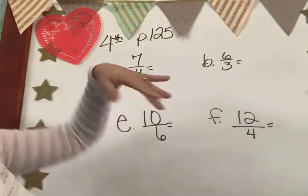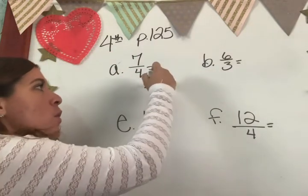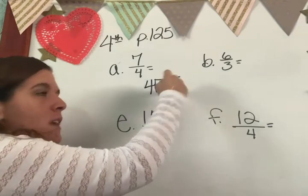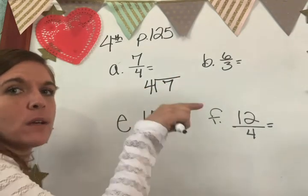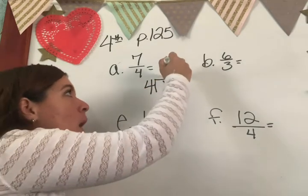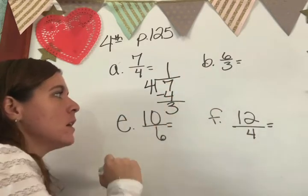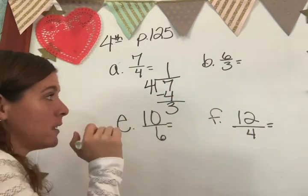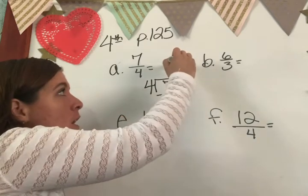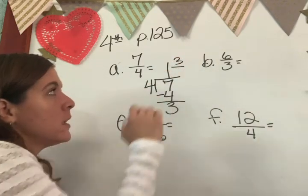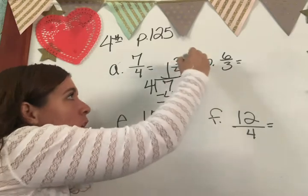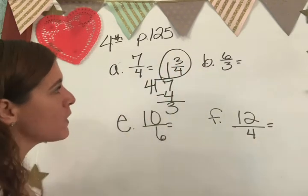Here we go. What do we do? Seven divided by four. How are we going to put that? Four into seven, right? How many times can four go into seven, buddy? One. One times four is four. Seven minus four is three. What are we going to do with that, Scarlett? Three is our numerator and four is our denominator.